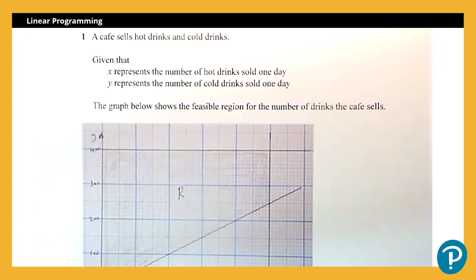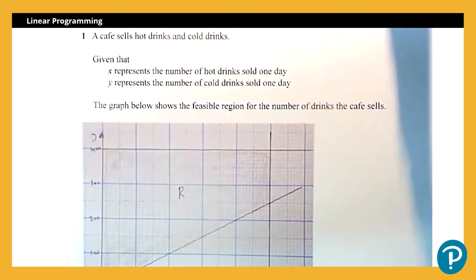Here we've got a cafe that sells hot drinks and cold drinks. Given that x represents the number of hot drinks sold one day, y represents the number of cold drinks sold one day, the graph below shows the feasible region for the number of drinks the cafe sells.